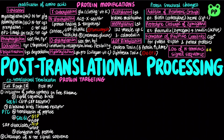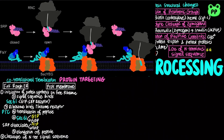Bacteria follow a homologous mechanism for translocation of ribosomes to the plasma membrane. They also use a signal sequence at the amino terminus of proteins to bind SRP receptors, known as FtsY, and the elongating polypeptide is translocated by the SEC-YEG translocon. The N-terminal signal sequence is also cleaved off once the protein is translocated.